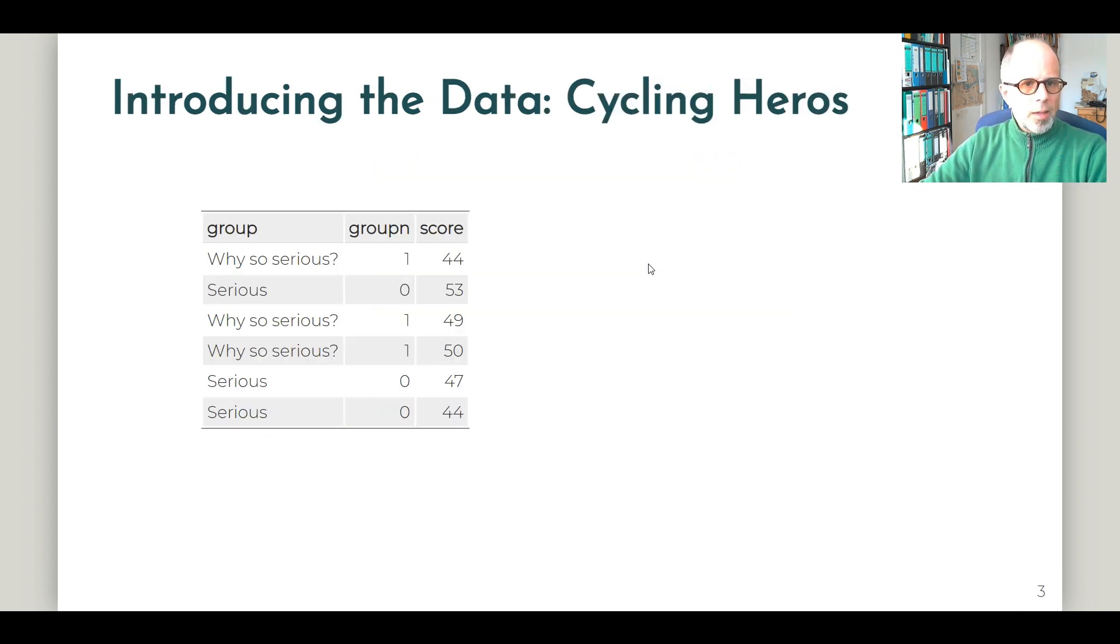So this is the data I am using. We have a group variable, and the two groups are serious and why so serious. I also have a numeric encoding for the correlation that we will do later on. And the why so serious group is encoded one, and the serious group is encoded zero. And then we just have a score. The range of values is supposed to be between zero and 100, just a score for performance of the cyclists.